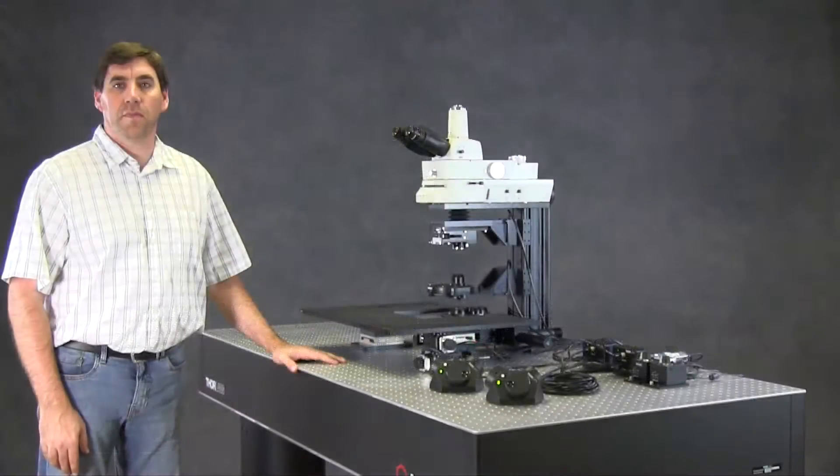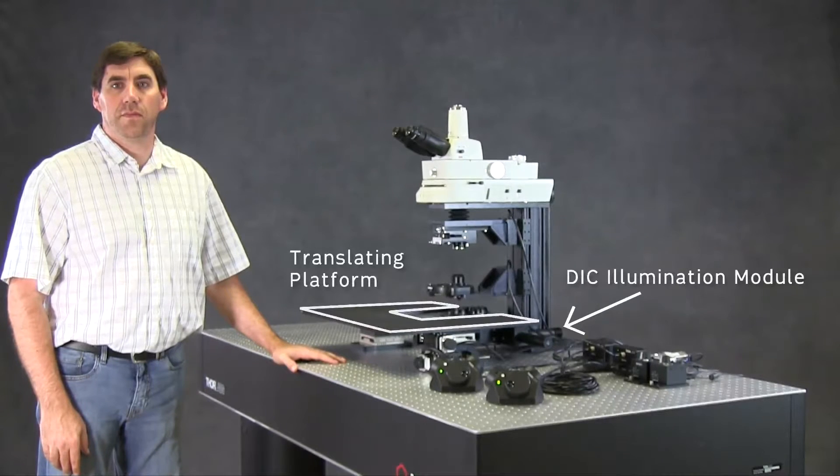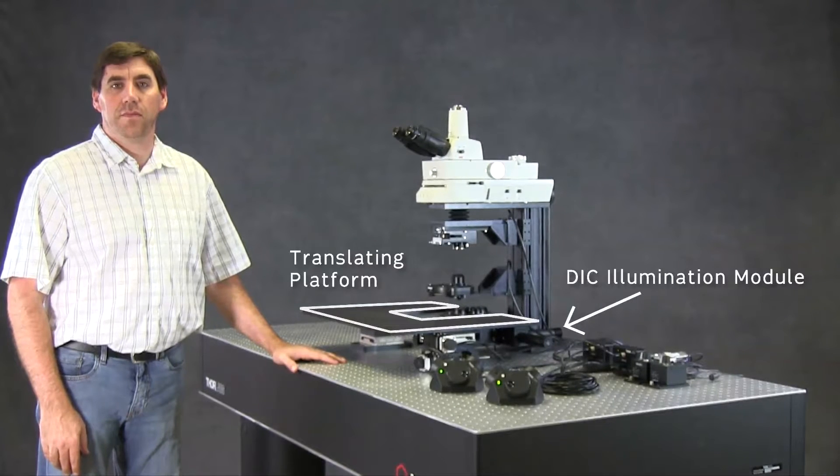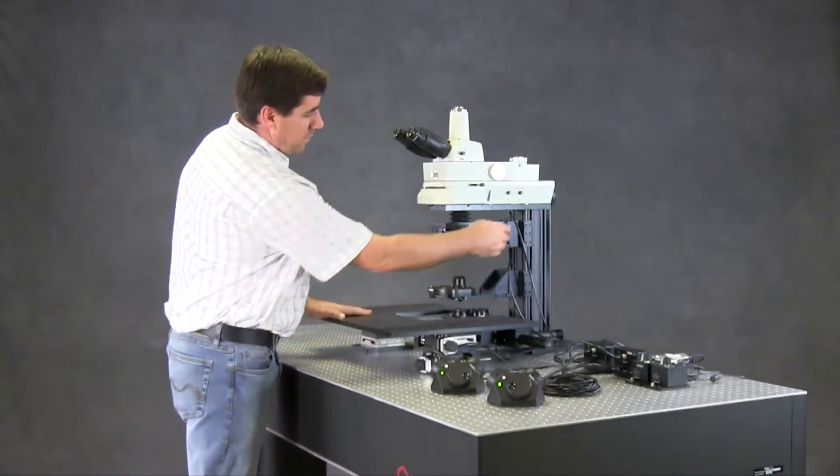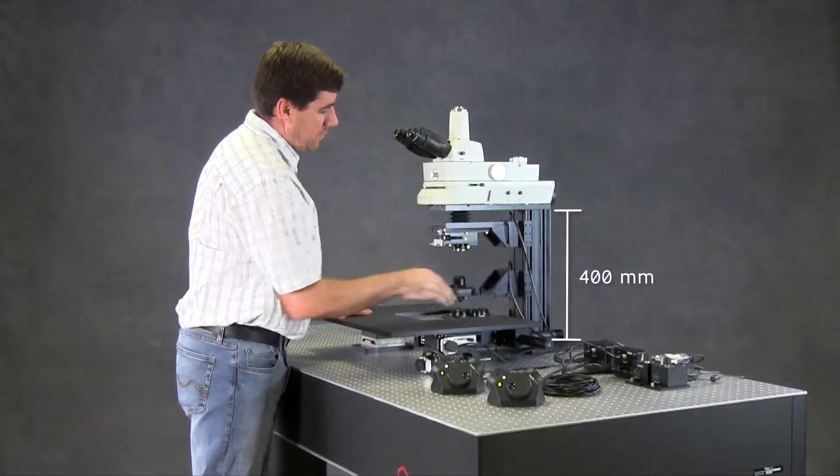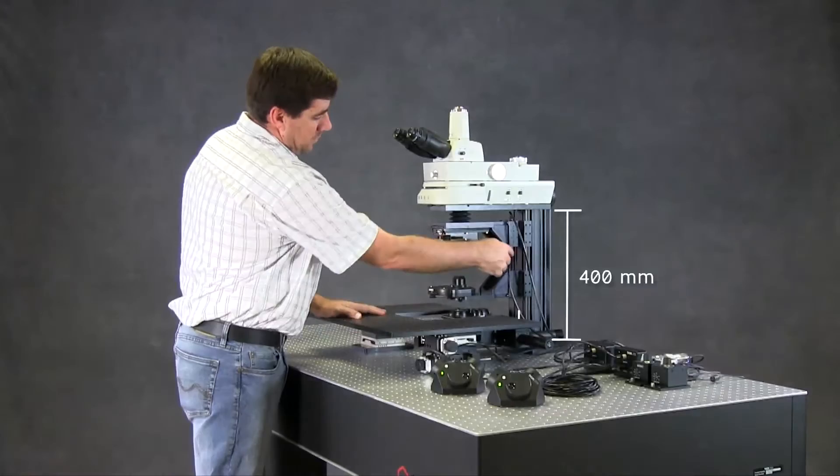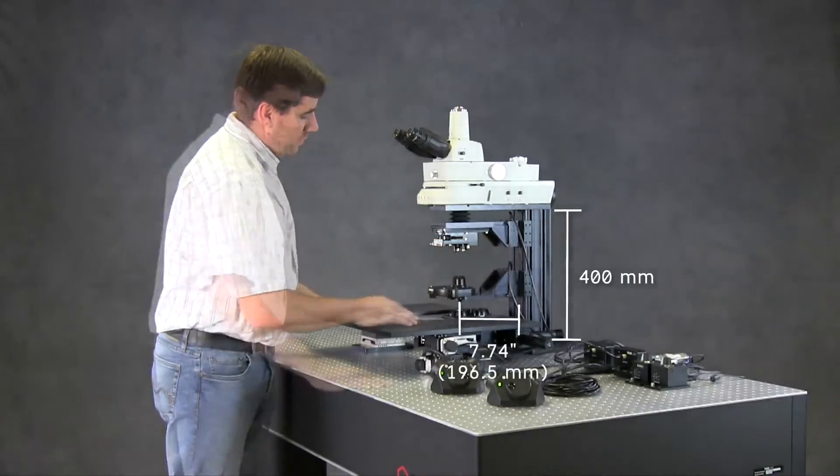This microscope is highlighted by a platform with two inches of travel in both X and Y, and also offers DIC imaging. We have equipped this microscope with our 400 millimeter tall body, and like all CERNA microscopes, it features a 7.74 inch throat depth.